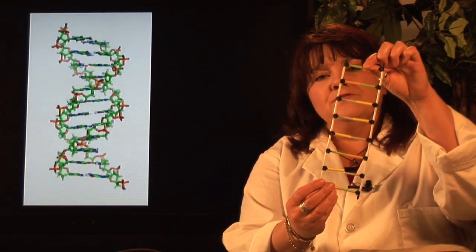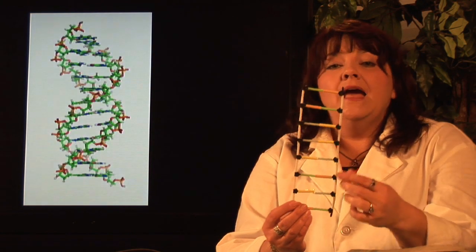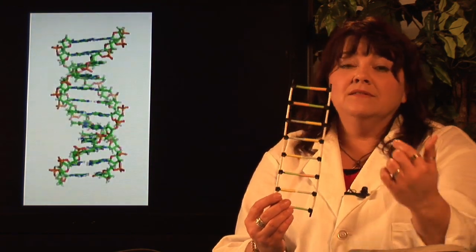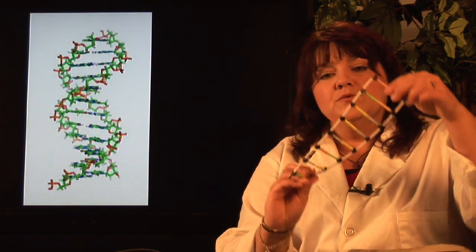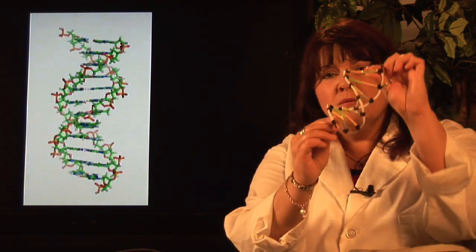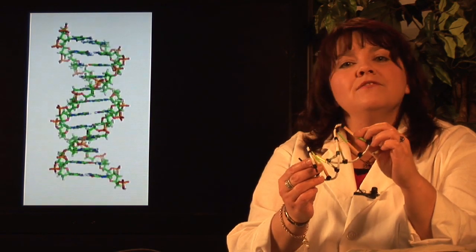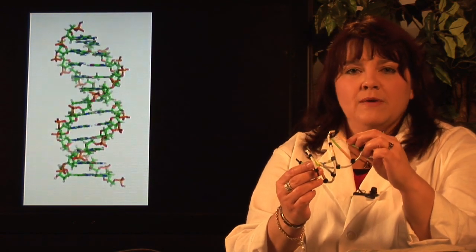Construct your ladder with your different bases — A always pairing with T and G always pairing with C, adenine with thymine, guanine with cytosine — then twist it up. And you've got a pretty accurate model of the double helix that fills the nuclei of every single cell in your body.